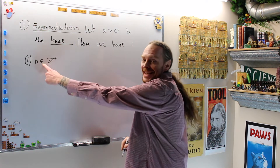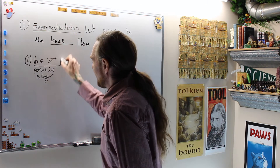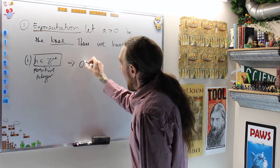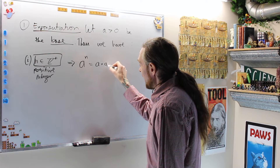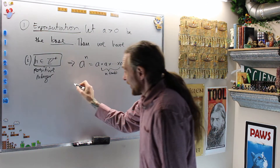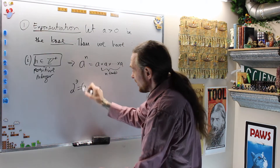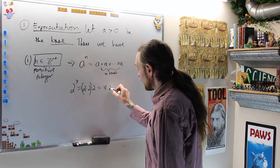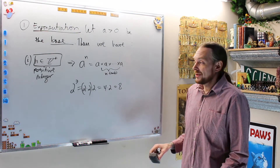Here's the formal definition: if N is in the set of all positive integers, then A to the exponent N means A times A times A... N times. As an example, 2 to the 3 is exactly equal to 2 times 2 times 2 three times. Using brackets — BEDMAS, brackets first — I associate and get 4 times 2, which is 8. That's exponentiation for positive integers.